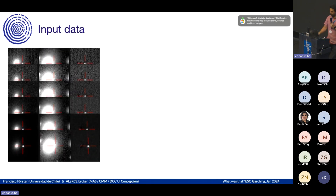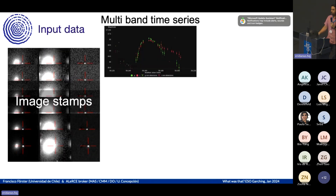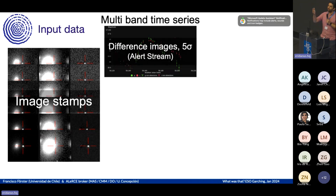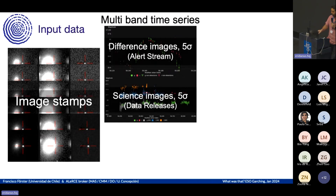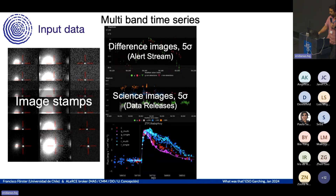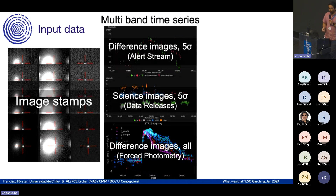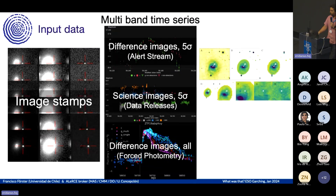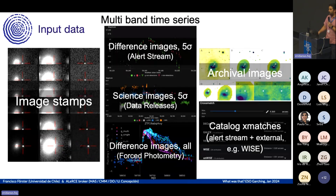What data does ALERCE use? First, image stamps. We use multiband time series — everything coming in the alert, so five-sigma detections in difference images. Also data releases, five-sigma in the science image, and less than five-sigma force photometry in the difference image. In the case of ZTF, force photometry started arriving about one month ago and we are working to provide this to the community. We also use images from other surveys as well as tabular cross-match data from other surveys.